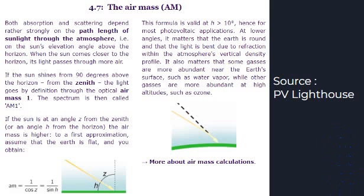At lower angles, it matters that the Earth is round and that the light is bent due to refraction within the atmosphere's vertical density profile. It also matters that some gases are more abundant near the Earth's surface, such as water vapor, while other gases are more abundant at high altitudes, such as ozone.